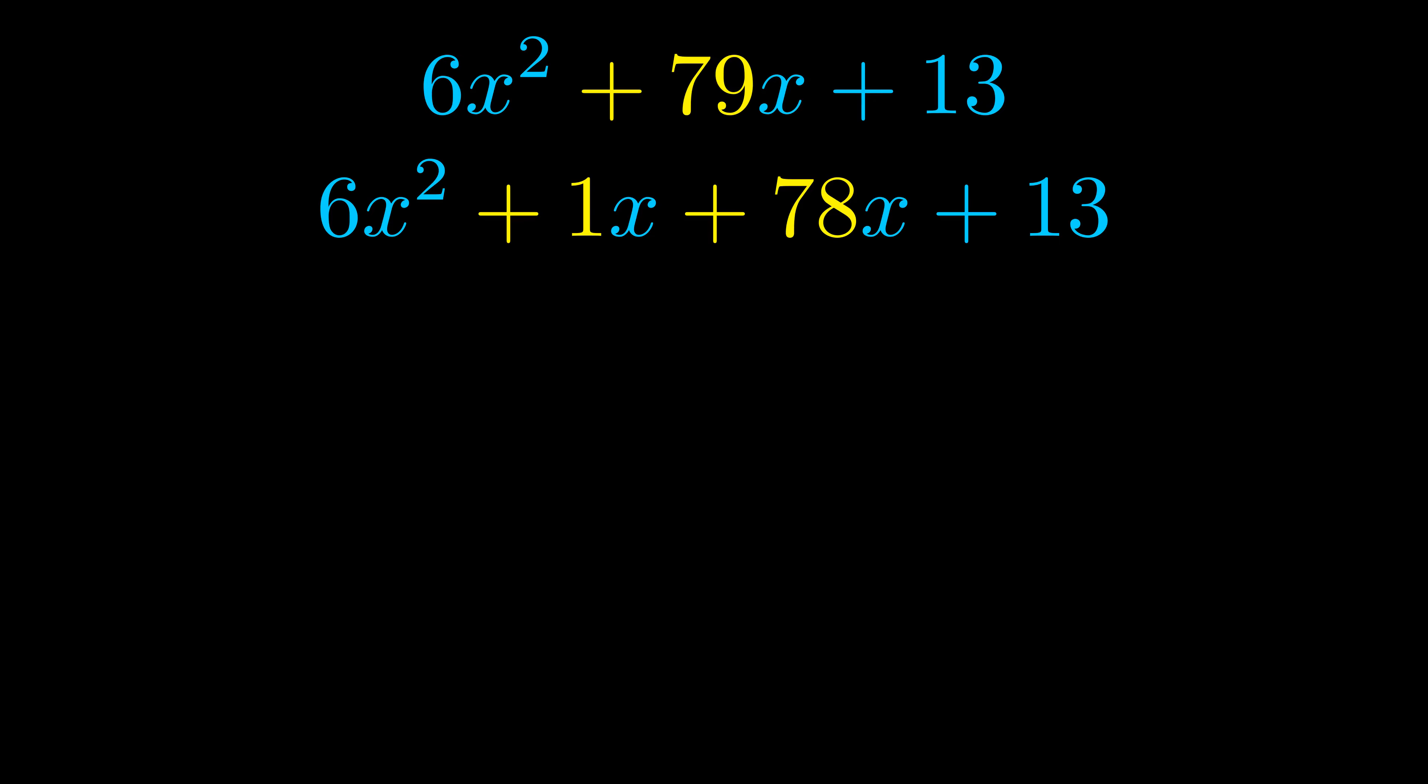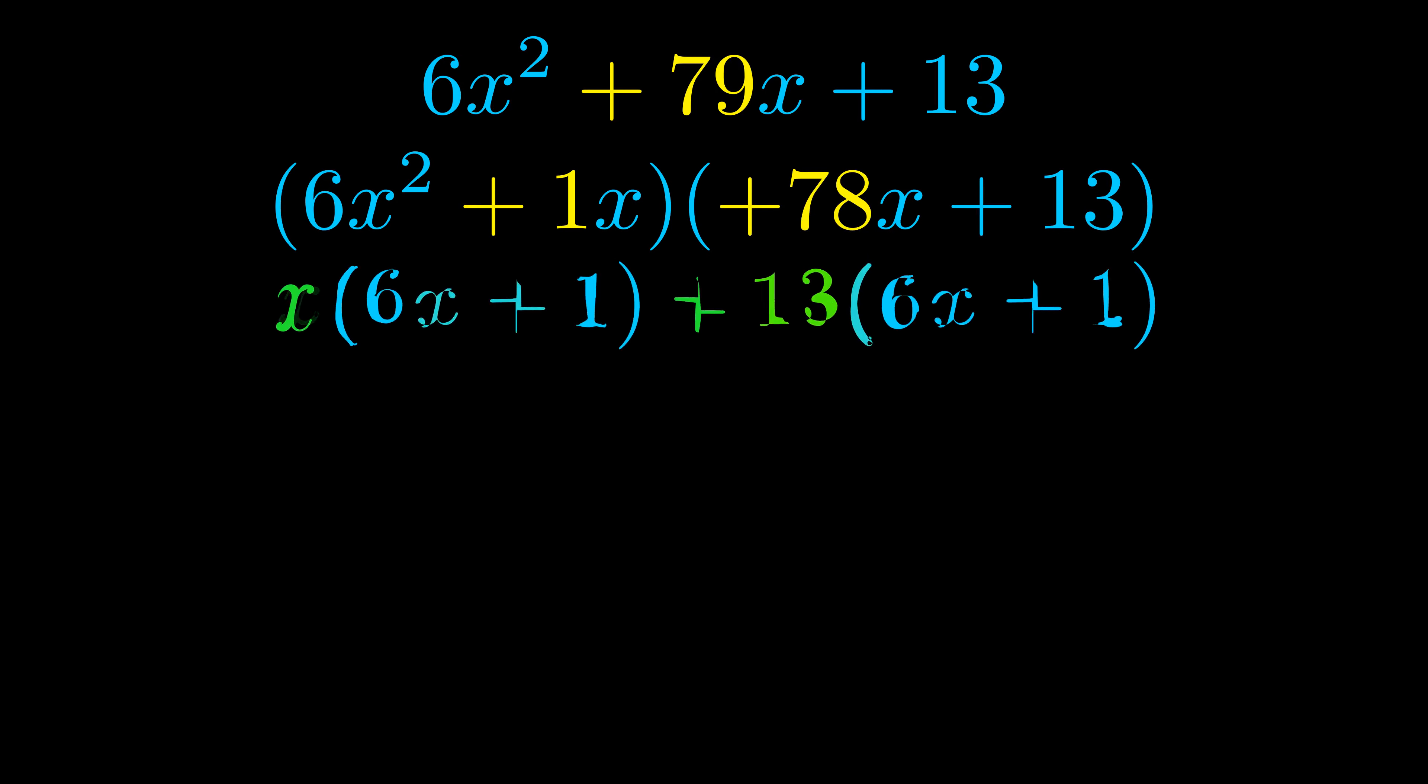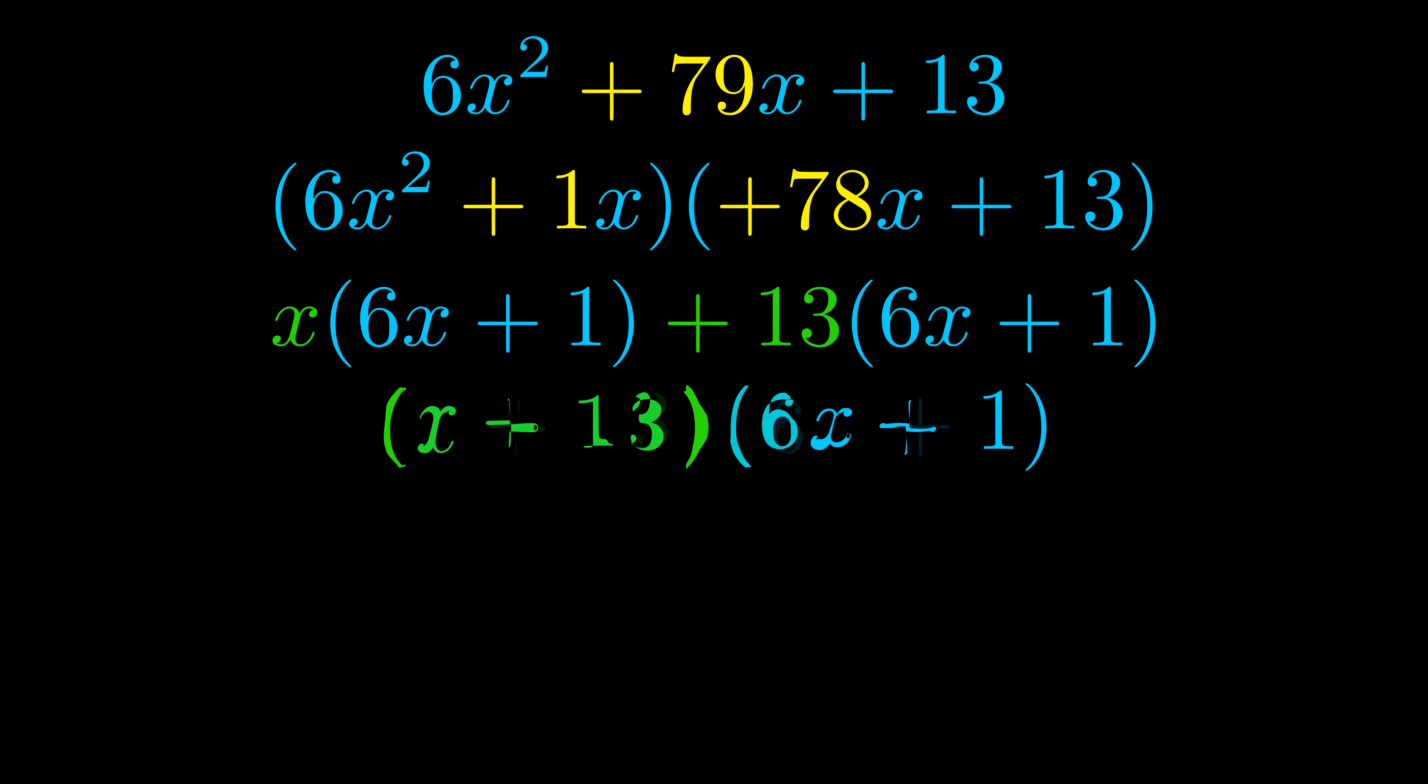Once we've done this, we put parentheses around the first term and the last term so that we can take the greatest common factor out of both terms. We can see the greatest common factor is now outside in green. Notice also how what remains inside of the parentheses is the same in both cases. The blue values are the same.